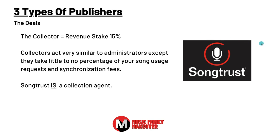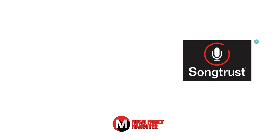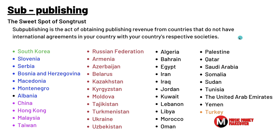Song Trust operates all over the world, and for that reason they collect from agencies all over the world. The sweet spot of Song Trust is that they have agreements and sub-publishing agreements in countries where you can't get in as an artist yourself. Sub-publishing is the act of obtaining publishing revenue from countries that do not have international agreements with your country's respective societies.